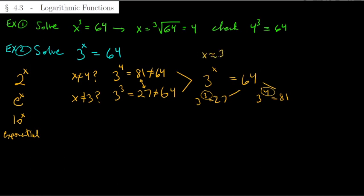We can make a guess — maybe it's 3.5 or 3.6. What is 3 to the power 3.5? You need a calculator for that because it's an exponential function. My calculator says that's approximately 46.765... but that's not 64 either, so it's got to be bigger than 3.5 — maybe 3.6 or 3.7. The point is we're just going to keep guessing and get a better and better approximation by doing that, but it's tedious. There's got to be a better way.